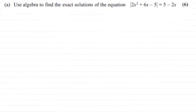Hi there. For this question we've got to use algebra to find the exact solutions of this equation. The mod of 2x squared plus 6x minus 5 equals 5 minus 2x for 6 marks. If you'd like to have a go at this, give yourself a moment to pause the video.